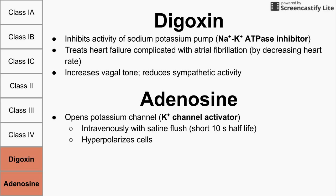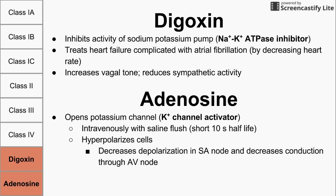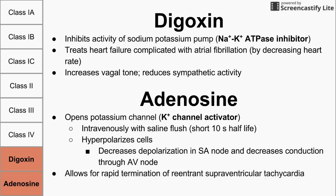Adenosine is a strong hyperpolarizer of cells, which makes sense because it opens potassium channels. It decreases depolarization in the SA node and decreases conduction through the AV node, allowing it to fix AV node reentrant tachycardias and slow tachycardias originating in the SA node. It allows for rapid termination of reentrant supraventricular tachycardias — it's like a chemical defibrillator that hyperpolarizes the nodal cells very quickly, lasts a very short time, and must be injected followed immediately by a saline flush.